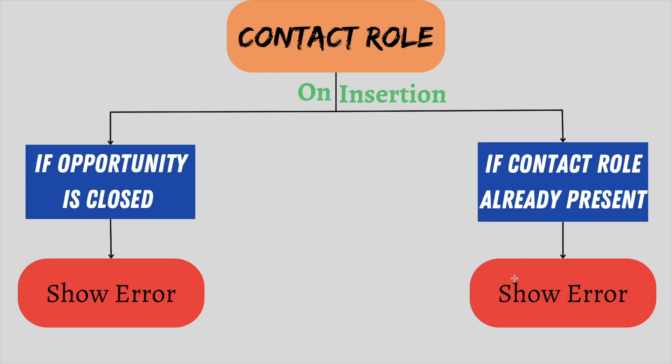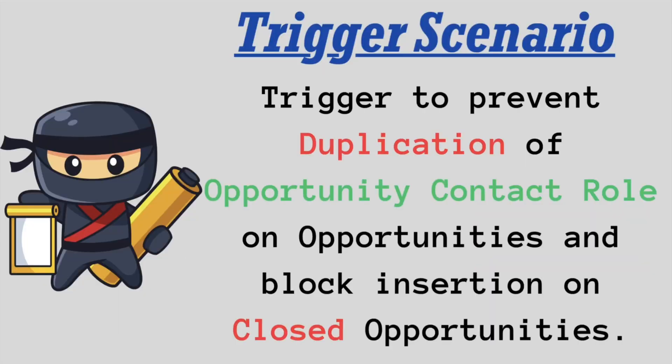Let's take an example. Say a contact record Con1 is already present on an opportunity as a contact role, and a user tries to insert Con1 again on the same opportunity. In that case, we need to show an error. So this is what we are going to do today.